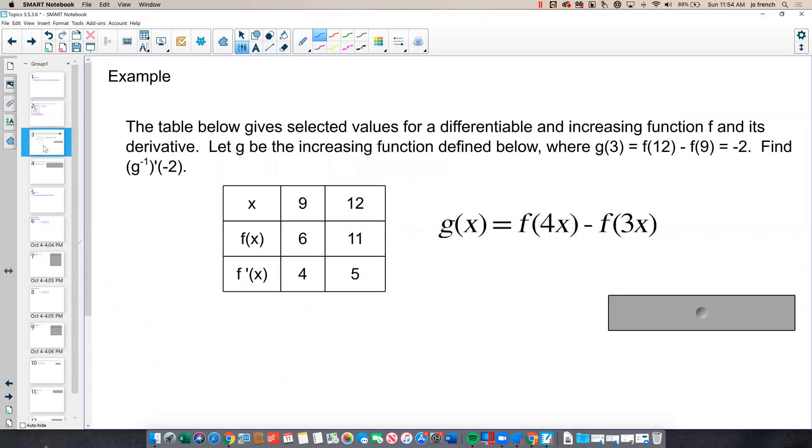Here's another example. The table below gives selected values for a differentiable and increasing function f and its derivative. Let g be the increasing function defined below, where g of 3 equals f of 12 minus f of 9 equals negative 2. So I need to find g inverse of negative 2.